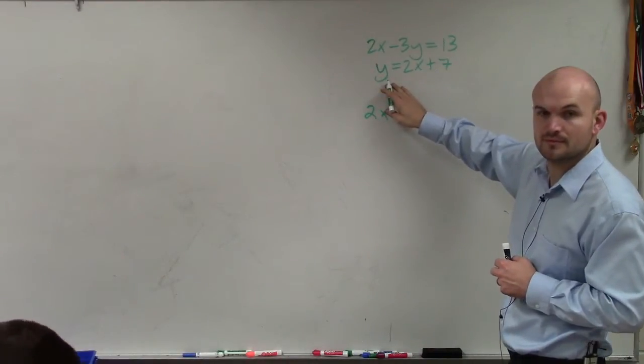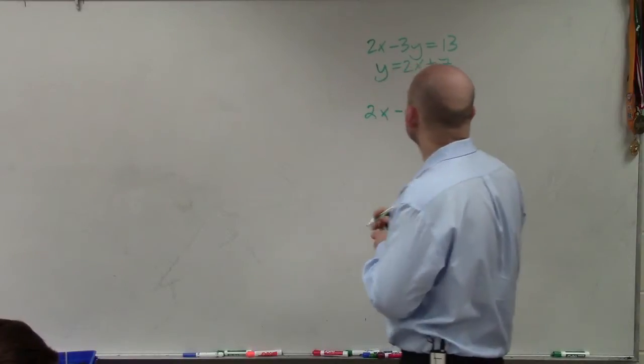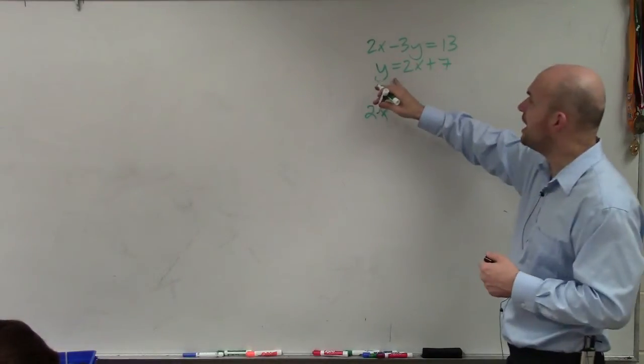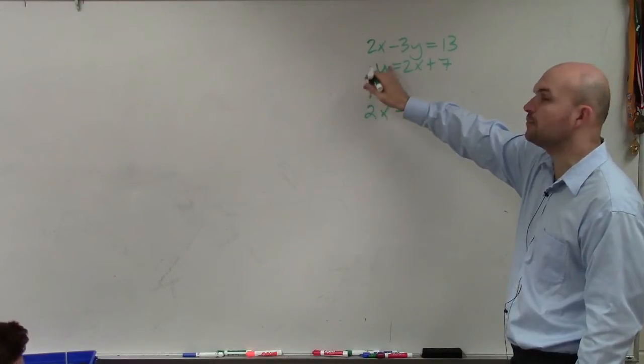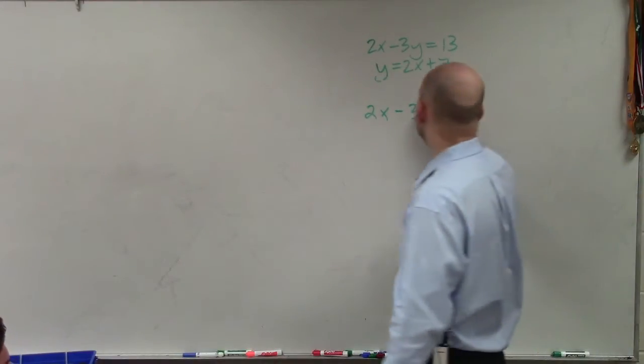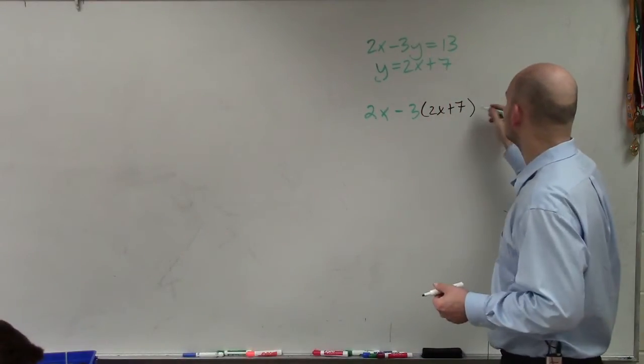which is going to be 2x minus 3 times the value of y. So instead of multiplying negative 3 times y, I'm going to multiply what y equals from the equation, which is 2x plus 7, and that equals 13.